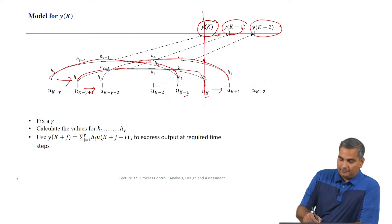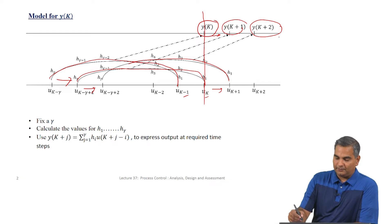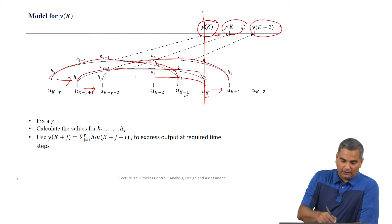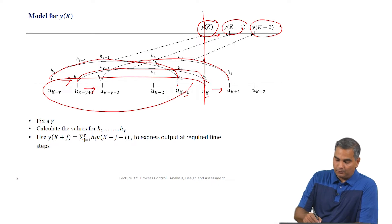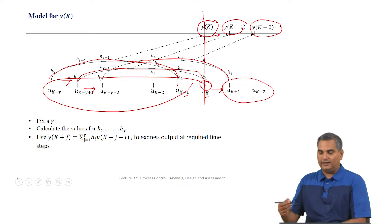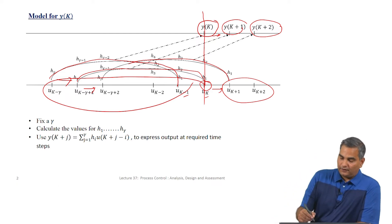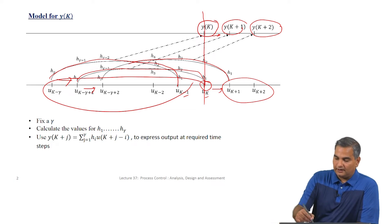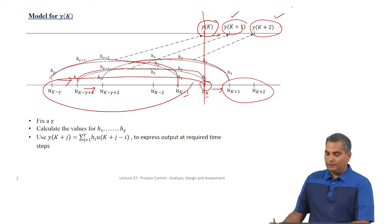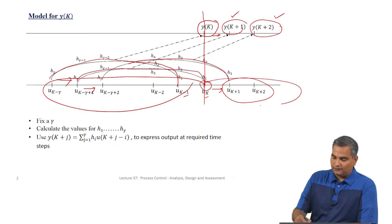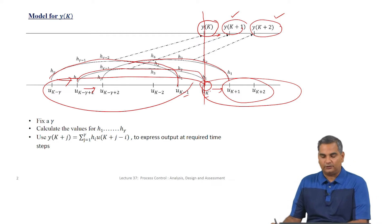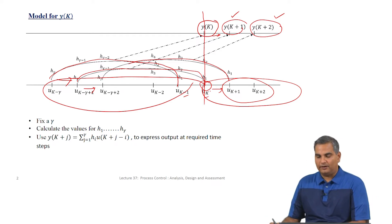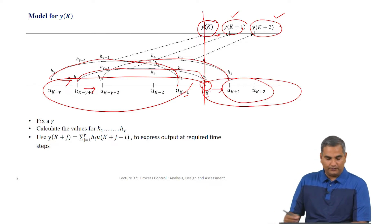So if I am at time k, I can write expressions for y(k+1), y(k+2) in terms of inputs that have already occurred and inputs that I am going to make now and in the future. This is the key idea: if I am interested in controlling my system and taking output values close to set points starting from y(k+1), y(k+2) and so on, I can write these as functions of the current and future manipulated variable values.